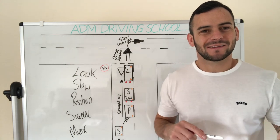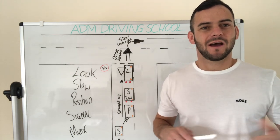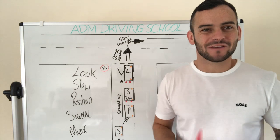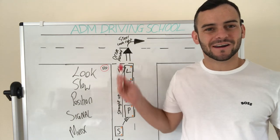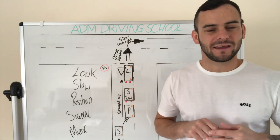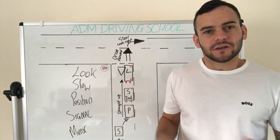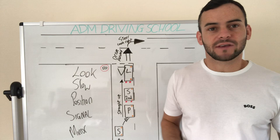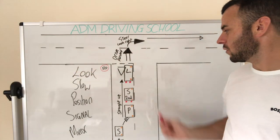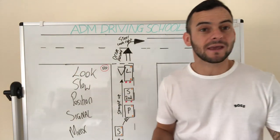How are you doing everyone and welcome back to the learner driver classroom. My name is Anthony from ADM Driving School and today we're going to be talking about turning right from a T-junction. I tend to find this one is a little bit easier than turning right from a major to a minor road.